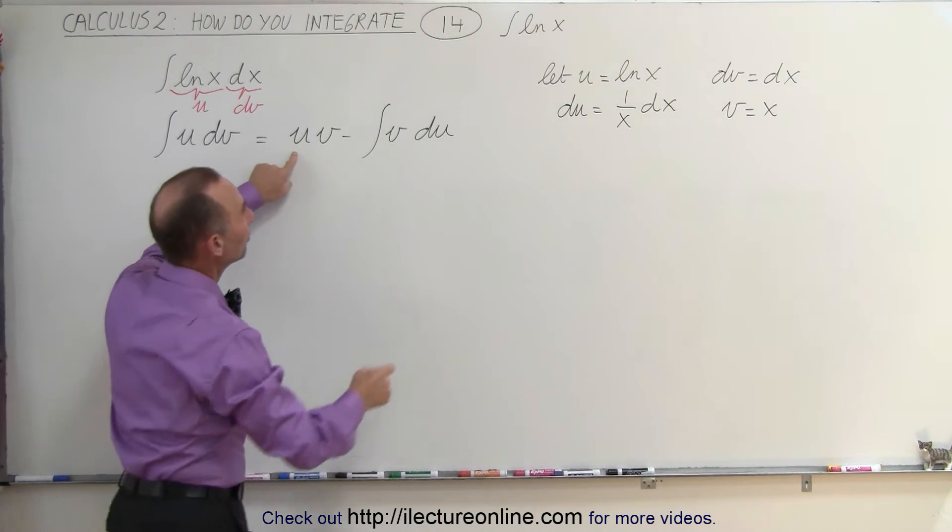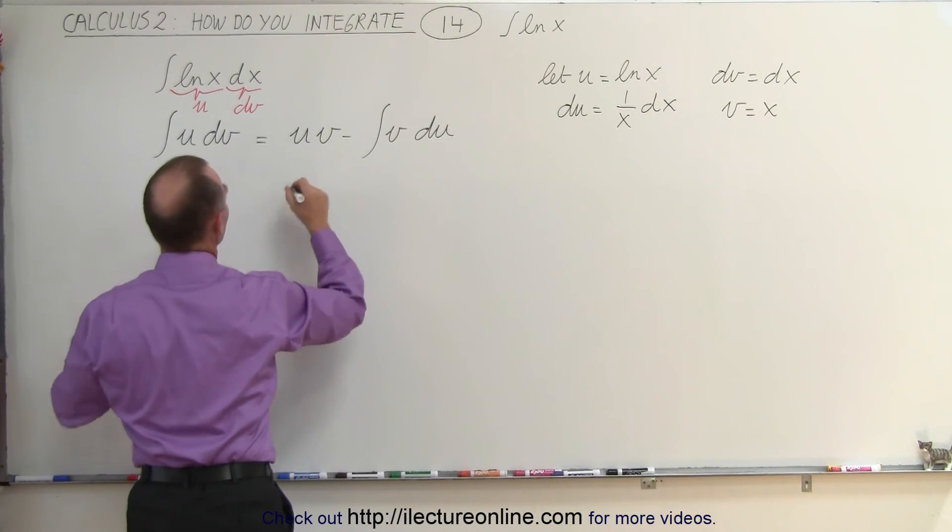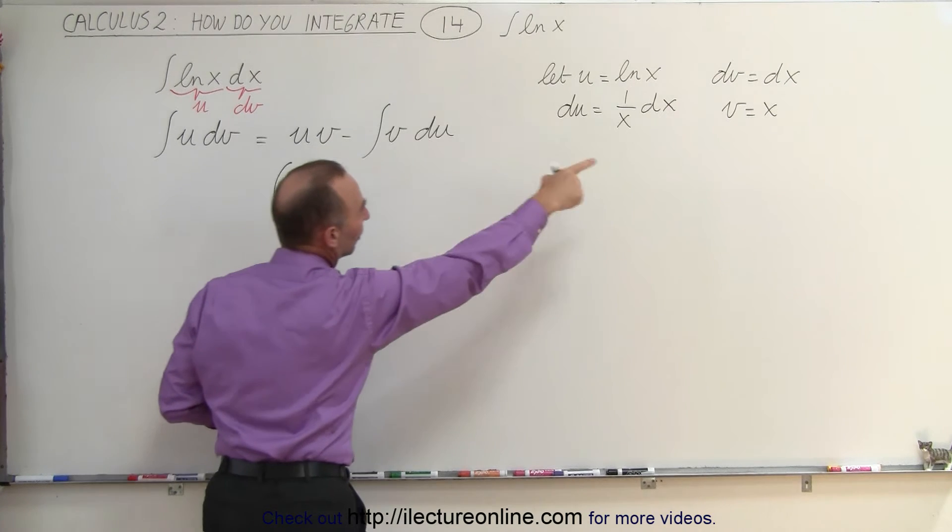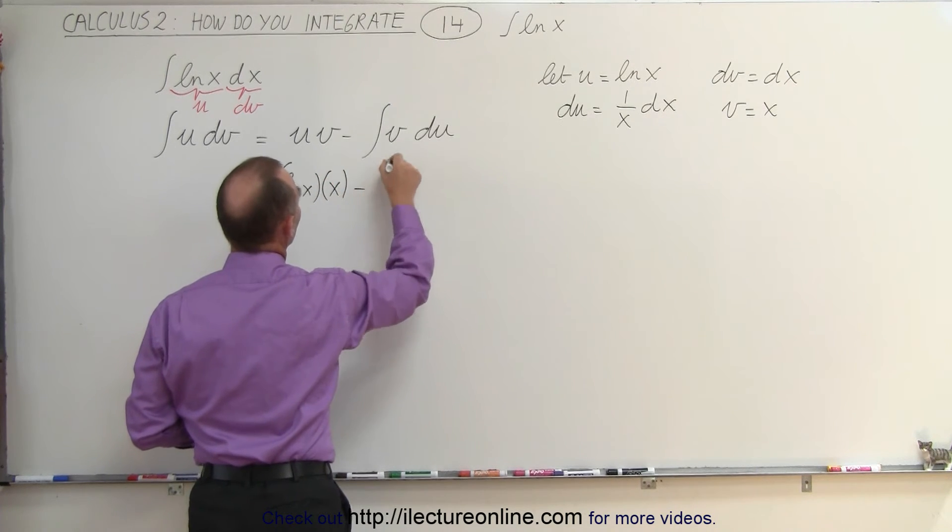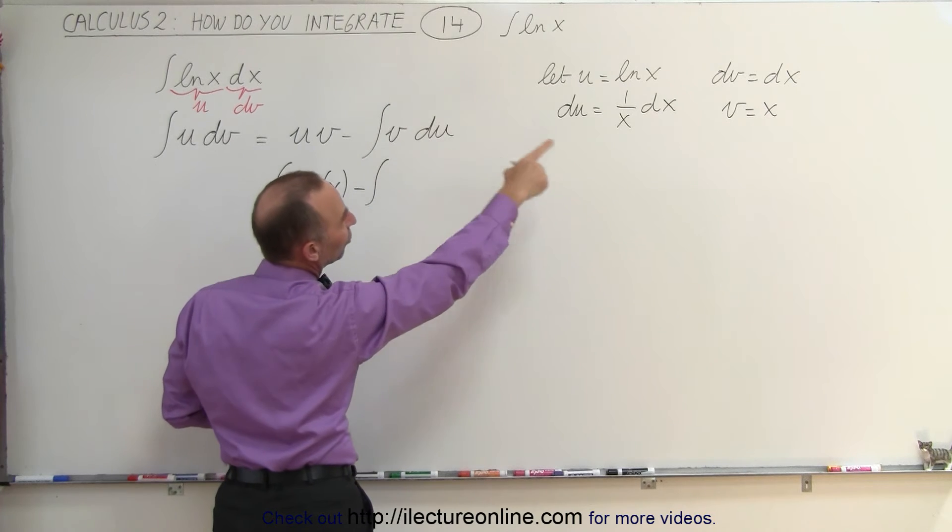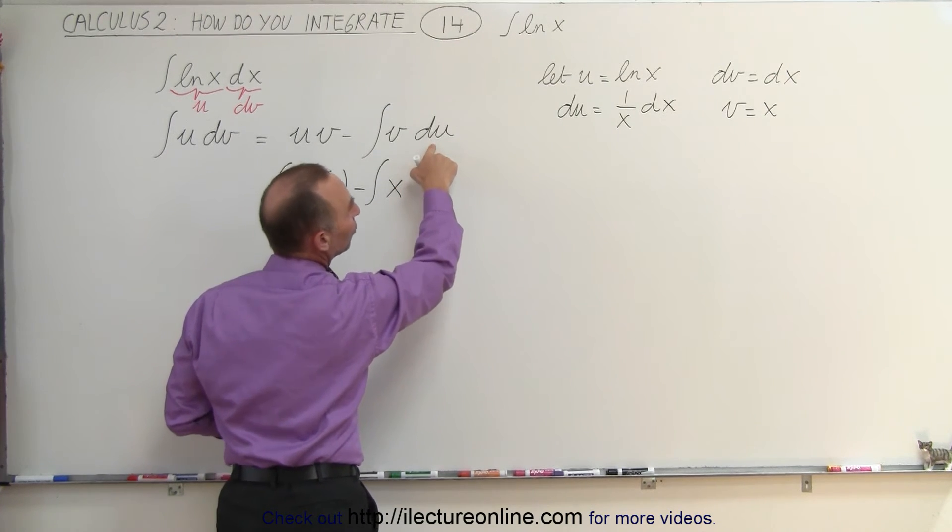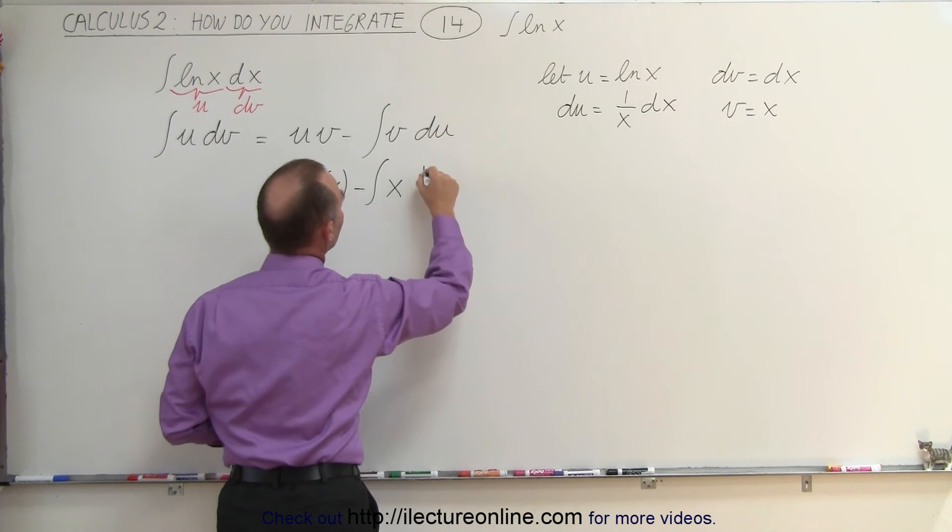So u is equal to the natural log of x, and we multiply that times v, and our v is equal to x, minus the integral of v du, which is x times 1 over x dx.